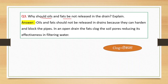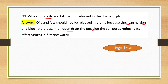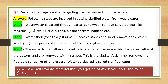Consumption of such water may cause many diseases in human beings. Question number three: Why should oils and fats not be released in the drain? Oils and fats should not be released in the drains because they can harden and block the pipes. In an open drain, the fats clog the soil pores, reducing its effectiveness in filtering water.